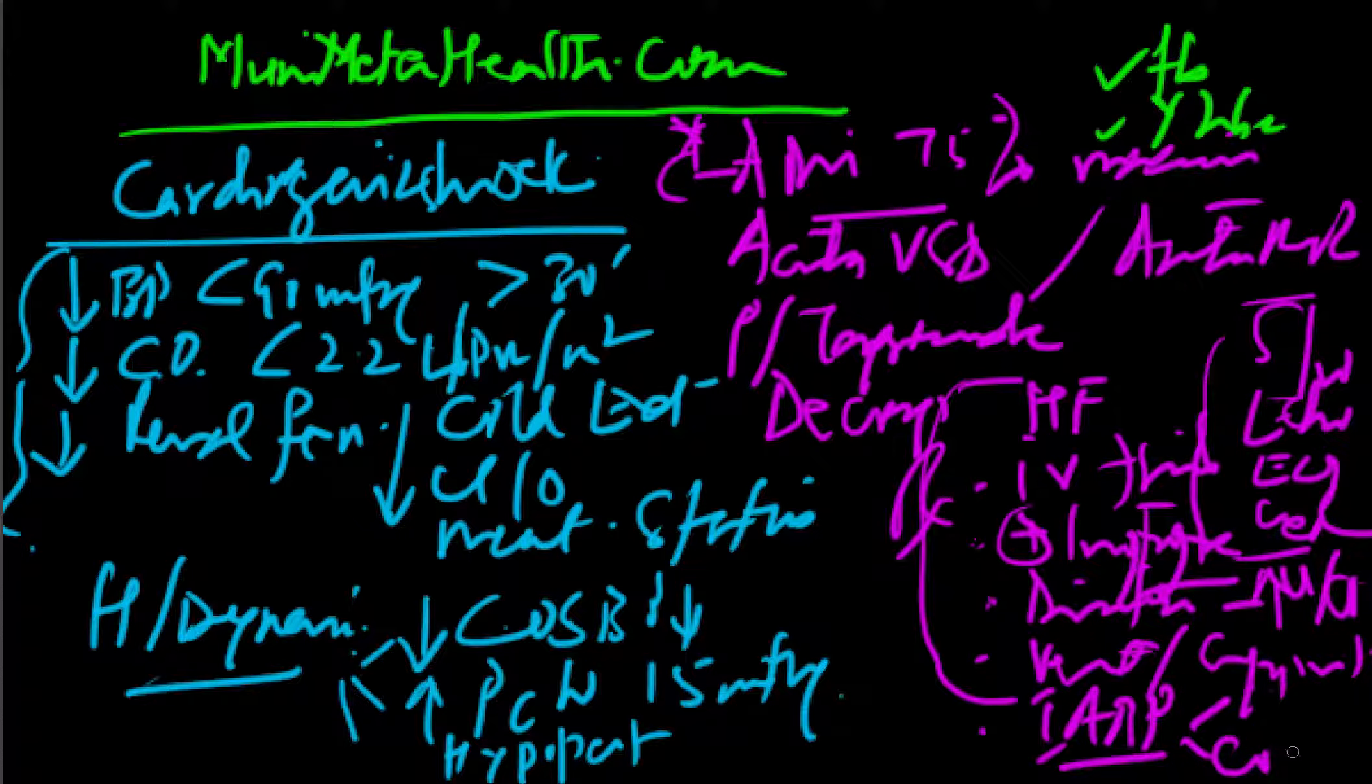Basically, it deflates in systole and inflates in diastole. So, as a result, the coronary perfusion will improve. And once the coronary perfusion improves, it also decreases the afterload on the patient. So, afterload reduction and a coronary perfusion are the two ways as to how the intra-aortic balloon pump works.